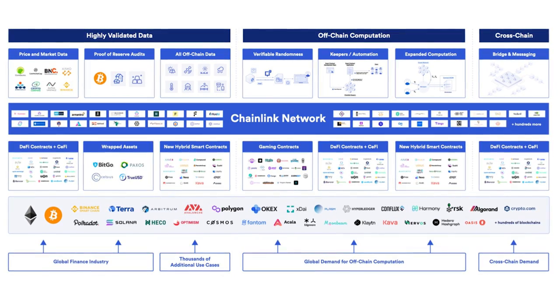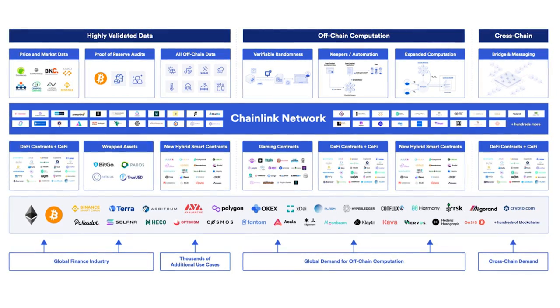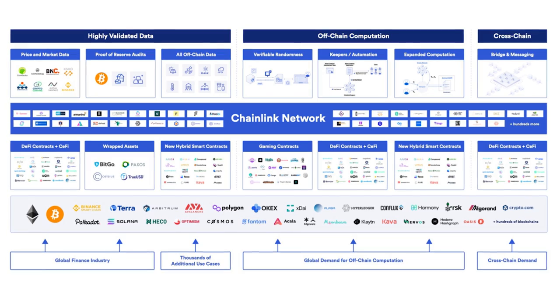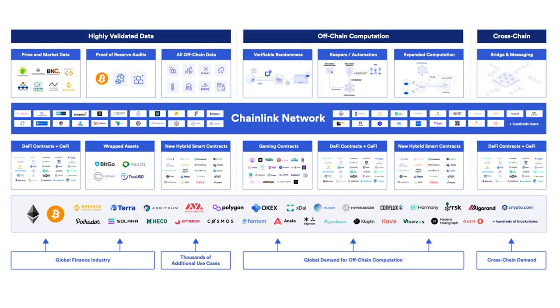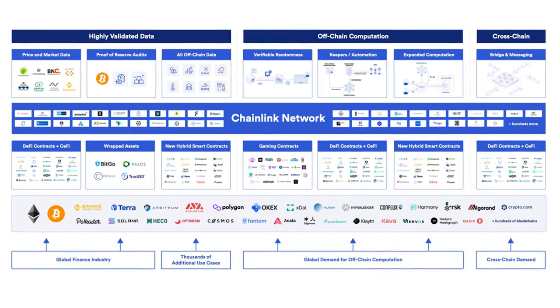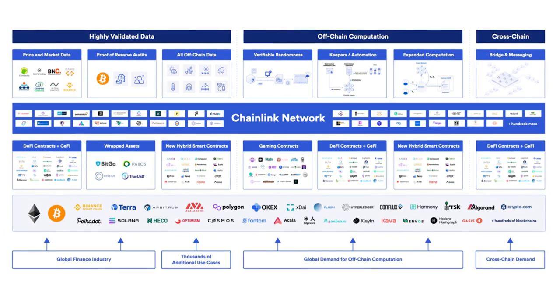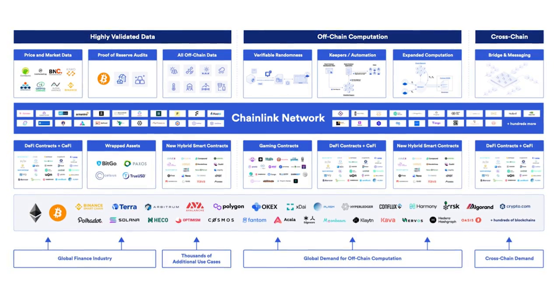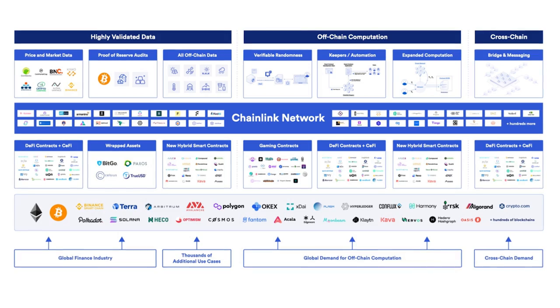Second, Chainlink's Verifiable Random Function, or VRF, provides a provably fair source of randomness for on-chain gaming, NFTs, and more, all backed by a cryptographic proof.